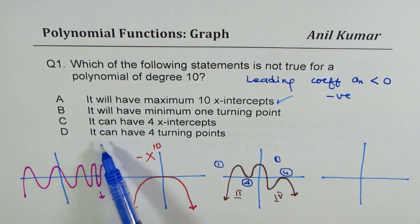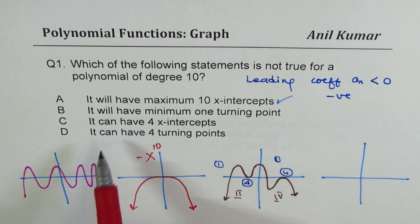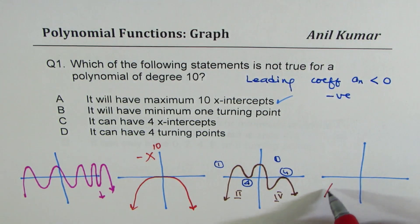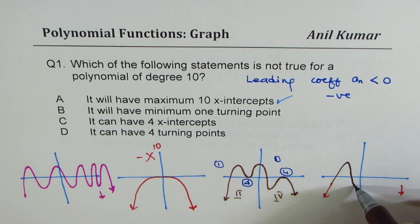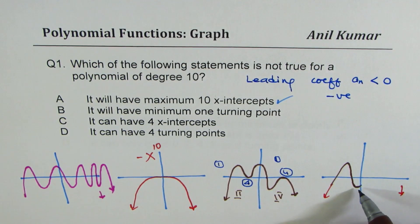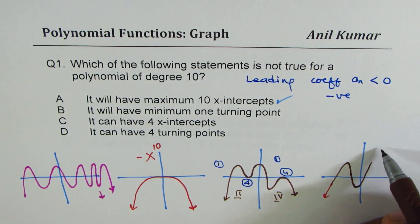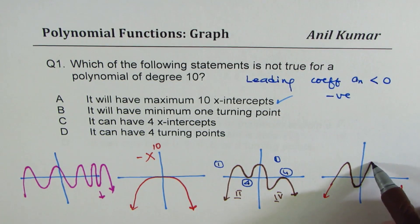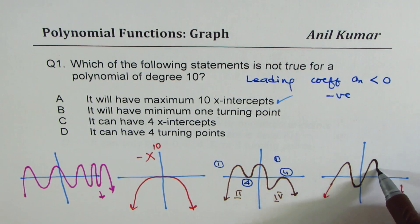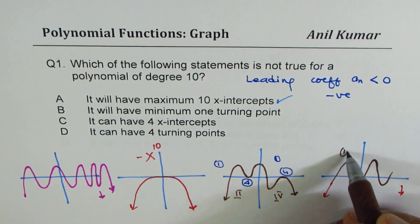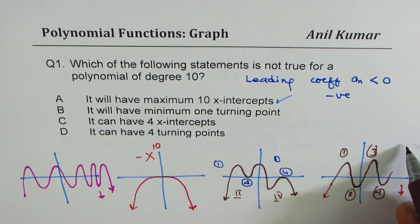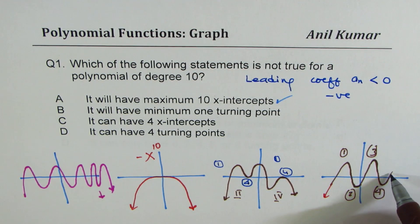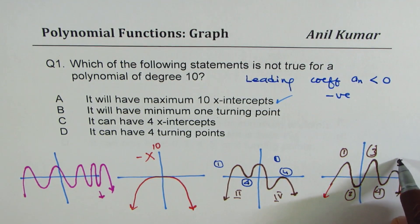Now the last part: it can have 4 turning points. Starting from one end, if you turn once, then a second time you're going toward quadrant 1 but need to land in quadrant 4, so you must turn again — that's 3. A 4th turn again sends you to quadrant 1, so you'd need a 5th turn. You cannot have 4 turns; you'll need 5.